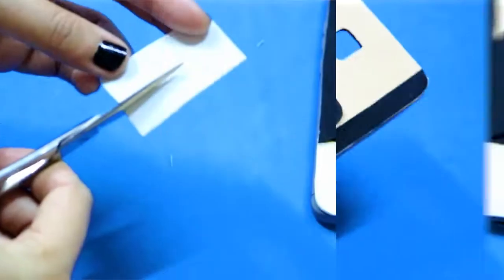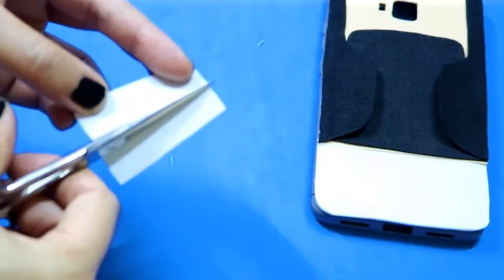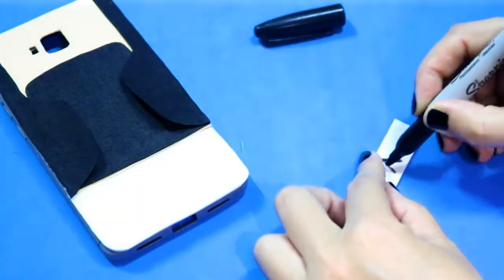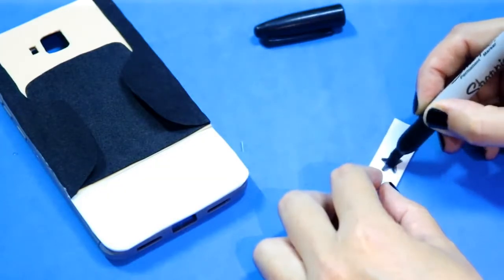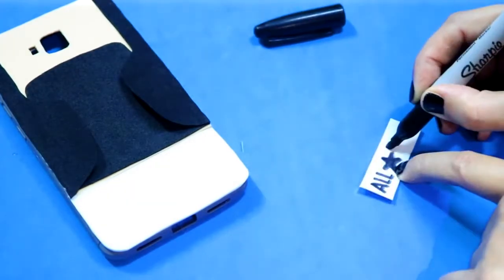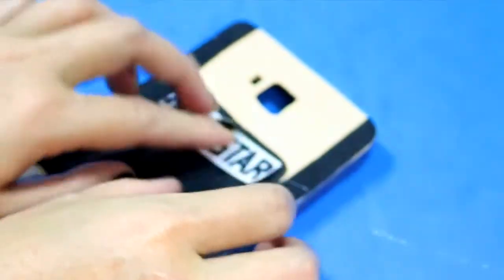To make the all-star logo, cut a rectangle piece out of white foam paper. Grab a sharpie and draw on the logo starting with a star in the center before writing the words on. When you're done, glue it on top of the bigger flap inside.